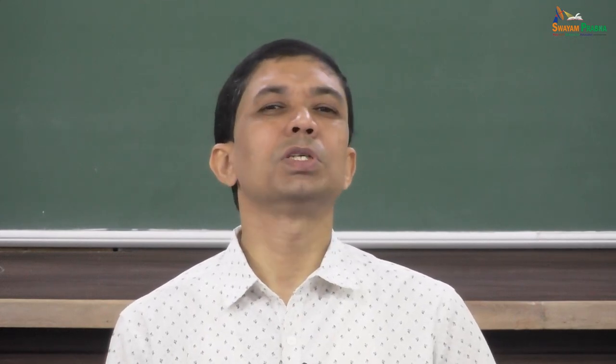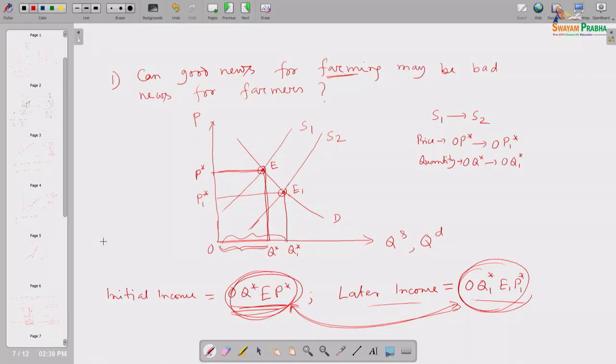Since it is a necessary commodity, its elasticity is less — or we can say demand is inelastic. Demand is inelastic means the absolute value of the elasticity of demand is less than 1. The absolute value is used because elasticity of demand is negative. The implication: equilibrium price is falling and the quantity he can sell in the market is increasing. When price is falling and quantity is increasing, with absolute elasticity less than 1, the commodity is necessary to its customers.